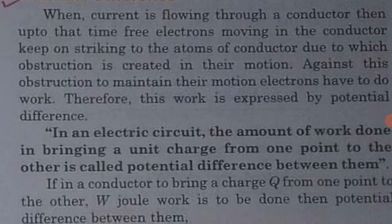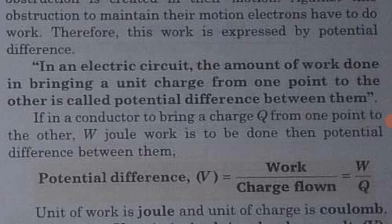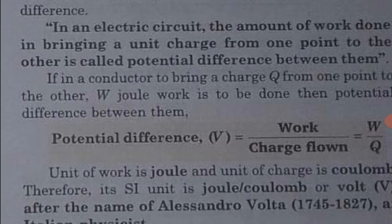The next is potential difference. In an electric circuit, the amount of work done in bringing a unit charge from one point to another is known as the potential difference between them. The electric potential at any point is defined as the work done in bringing a unit positive charge from infinity to that point. Potential difference is equal to W upon Q.